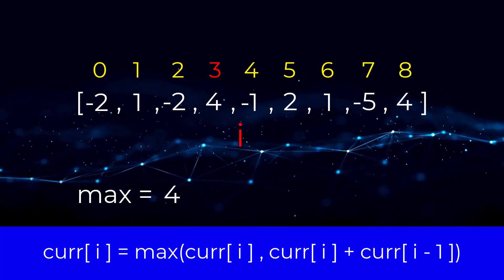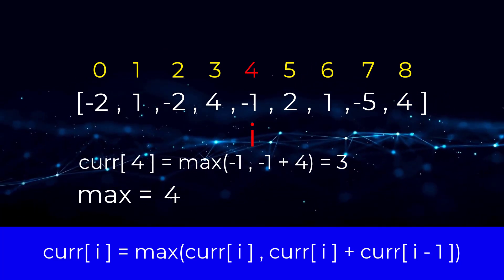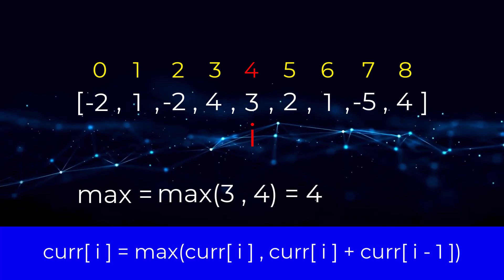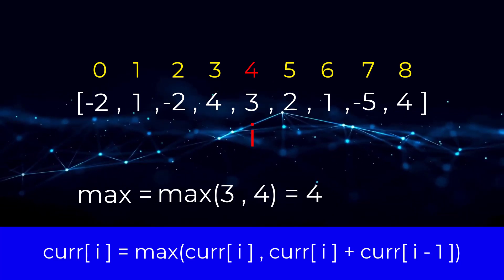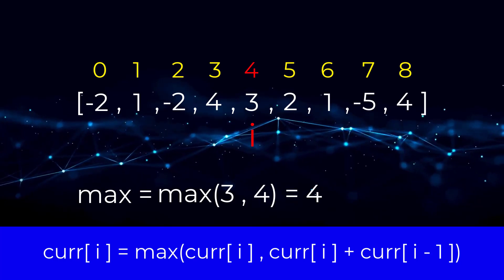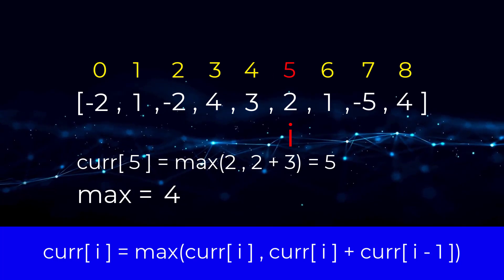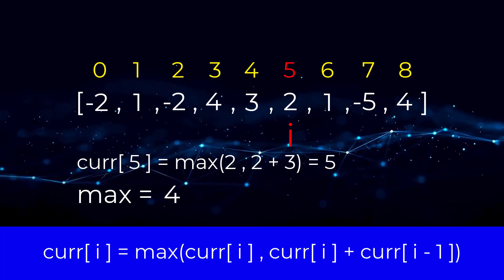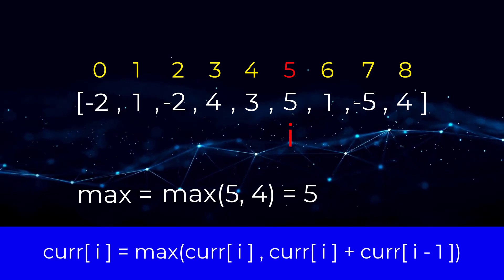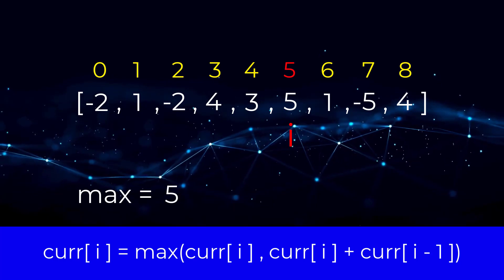Let's apply this formula to the rest of the array. We move to negative one, and then we compute the max between the two subarrays, and we get a value of three. Then we compute our new max between three and four, and since four is greater than three, it remains the same. Then we move to value two. We compute the max between two and five, and five is greater. So we set five in our current position. Then we compute our new max, and five is greater than four, so that becomes the new max.